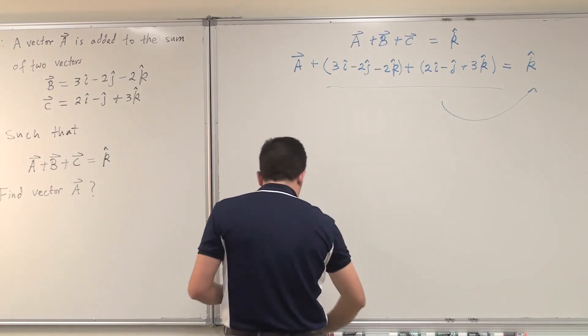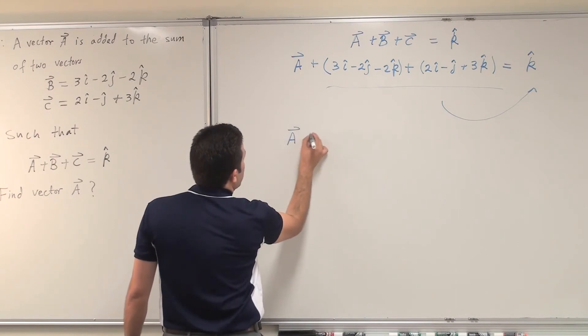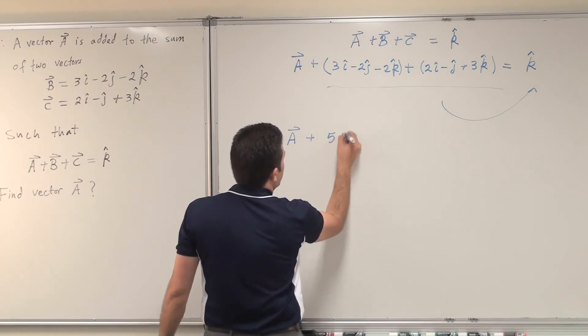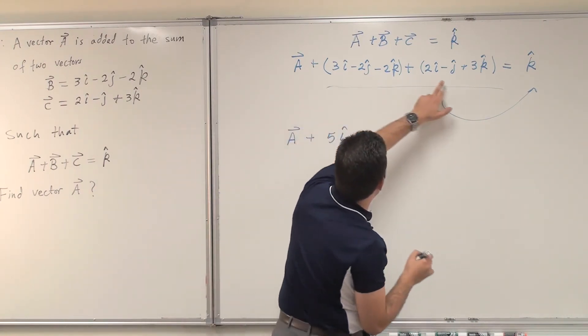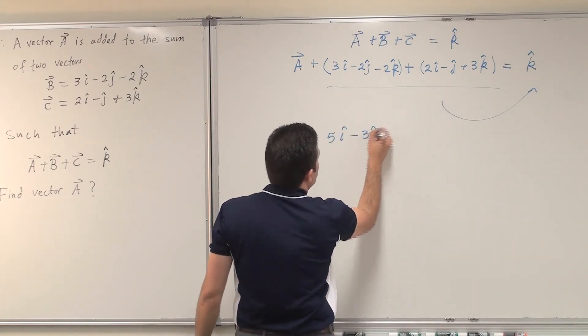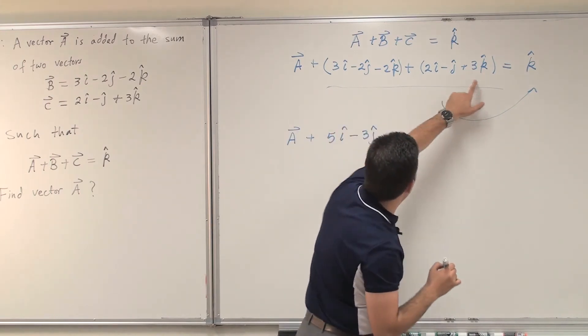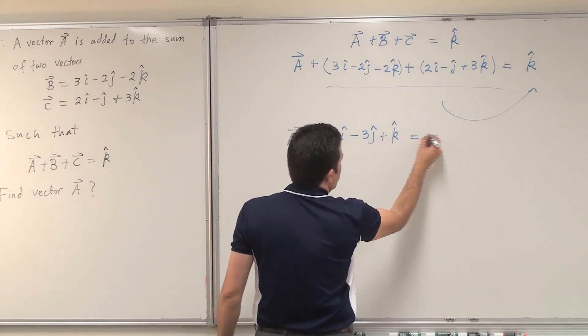So I can simplify those terms, saying A plus 3i-hat plus 2i-hat is 5i-hat, and minus 2j-hat plus minus j-hat is minus 3j-hat, and minus 2k-hat plus 3k-hat is plus k-hat. This should equal k-hat.